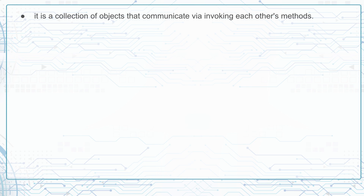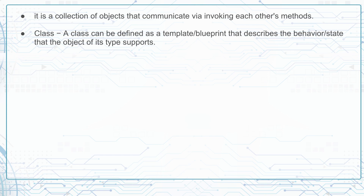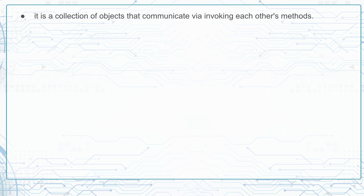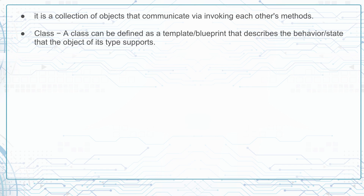First, let's talk about some general terminologies in Java. We start with the class. A class can be defined as a template or blueprint that describes the behavior and state that the object of its type supports.